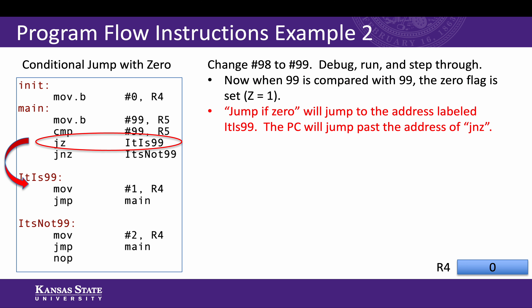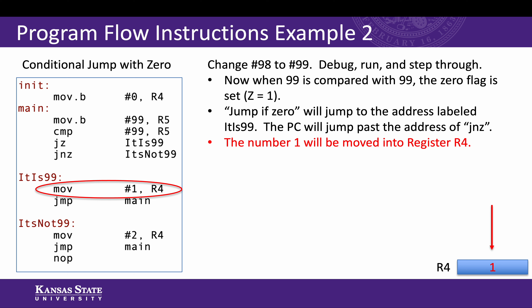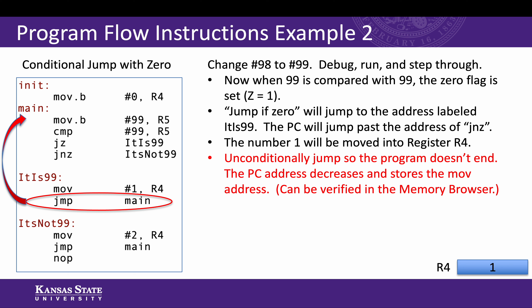So then the program counter marches along and gets to the jump-if-zero instruction, and this will jump to the address labeled 'it is 99.' Since the zero flag is up, the PC will jump past the address of JNZ and enters the 'it is 99' routine. In that routine, the number 1 is moved into register R4 — you can verify this in the register window — which shows us that yes, we did enter into that routine. The program counter then hits that unconditional jump, so the program goes back up to main. You'll see in CCS that the PC address decreases, once again storing that move address, which you can verify in the memory browser by looking at the location of main in memory.